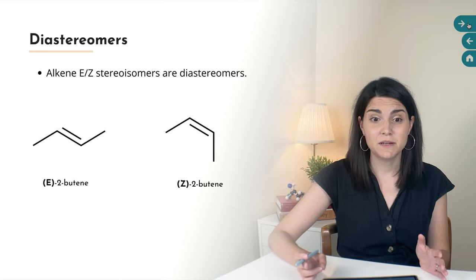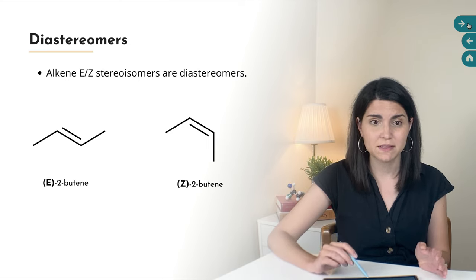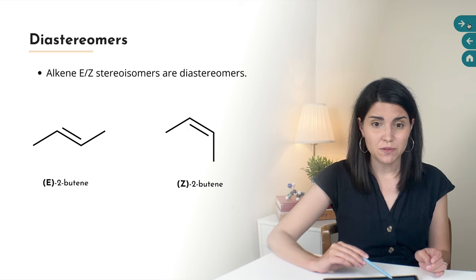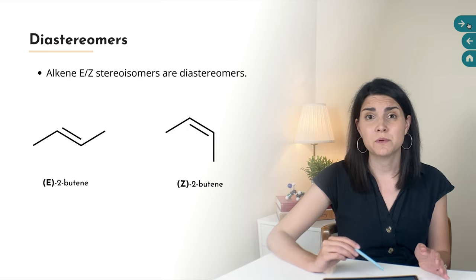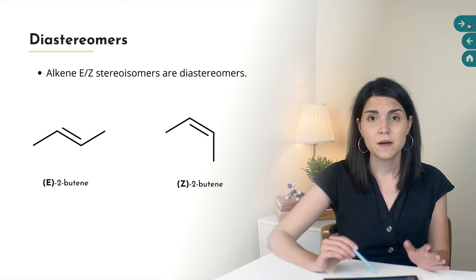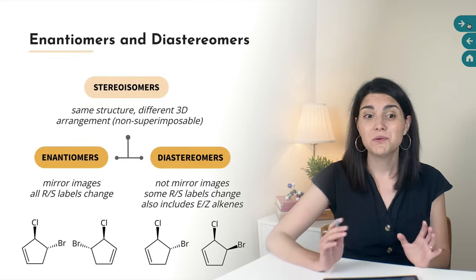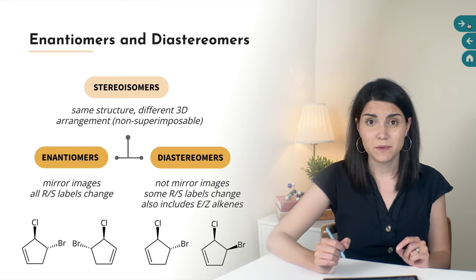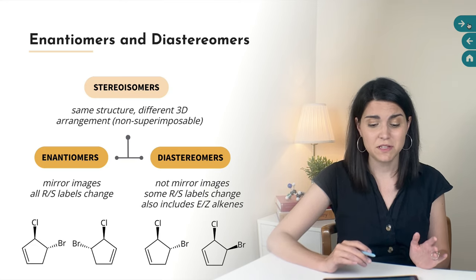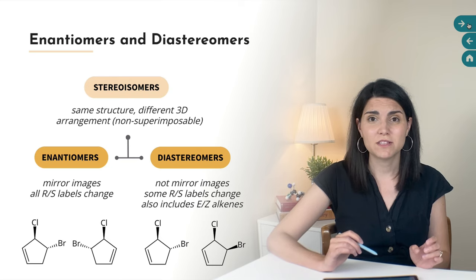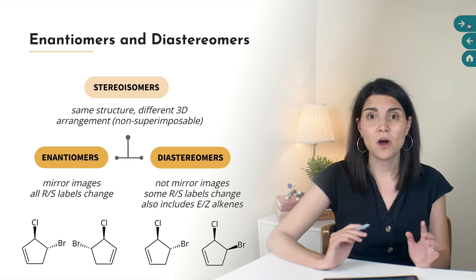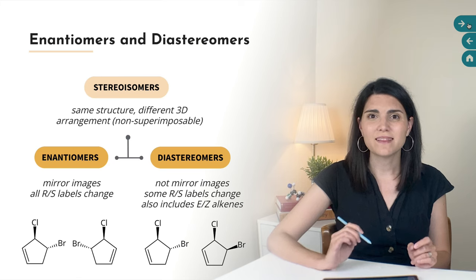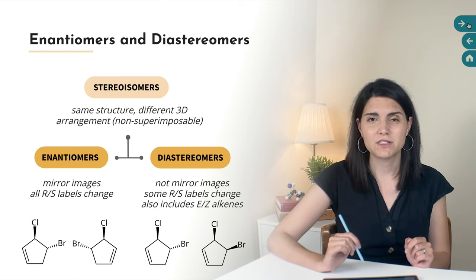Other examples of diastereomers can include substituted alkenes which have an E configuration or a Z configuration of their double bonds. So E-2-butene and Z-2-butene are diastereomers of one another — they are stereoisomers, but they aren't mirror images. To sum all of that up, two molecules that are stereoisomers of one another will either be enantiomers or diastereomers. You know they're enantiomers if they're mirror images and if all of the R and S configurations have changed — all of them have to swap. You know two molecules are diastereomers if they are not mirror images, and you can also tell if at least one, but not all, of the R and S configurations have changed.